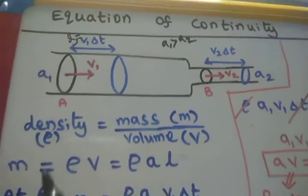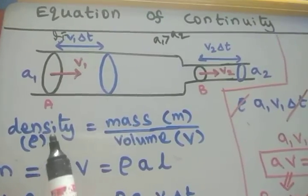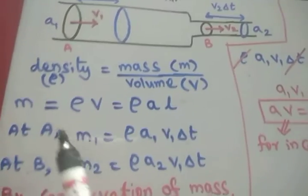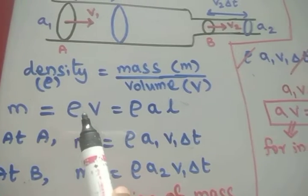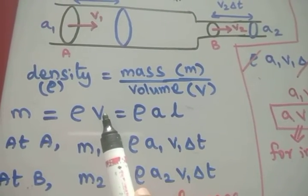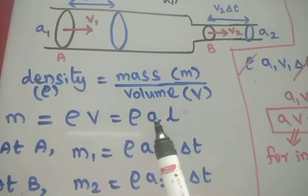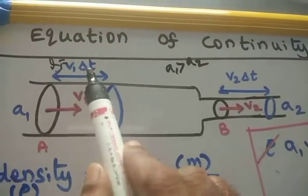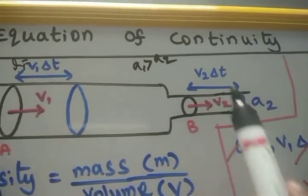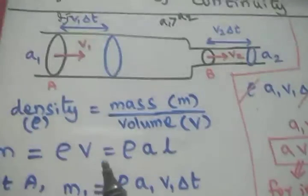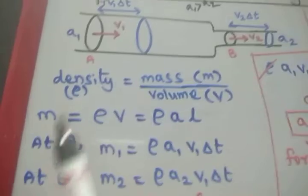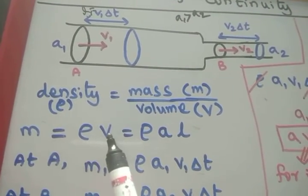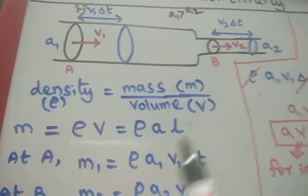We know that the density of the liquid equals mass divided by volume, so mass equals density into volume — that is, mass equals rho into volume. Volume is the product of area into length. So this length is V1 delta T at point A and V2 delta T at point B.